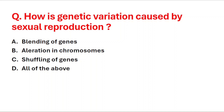Next question: how is genetic variation caused by sexual reproduction? A: blending of genes, B: alteration in chromosomes, C: shuffling of genes, D: all of the above. The right answer is option D, all of the above.